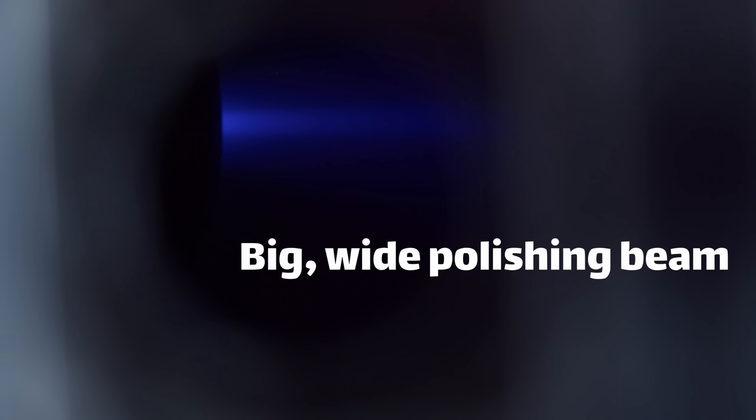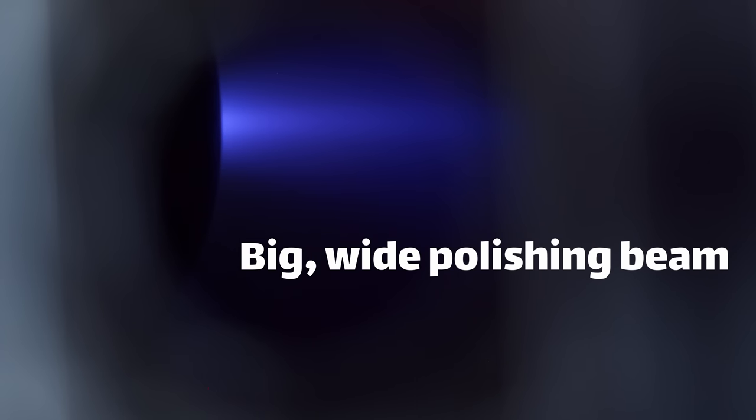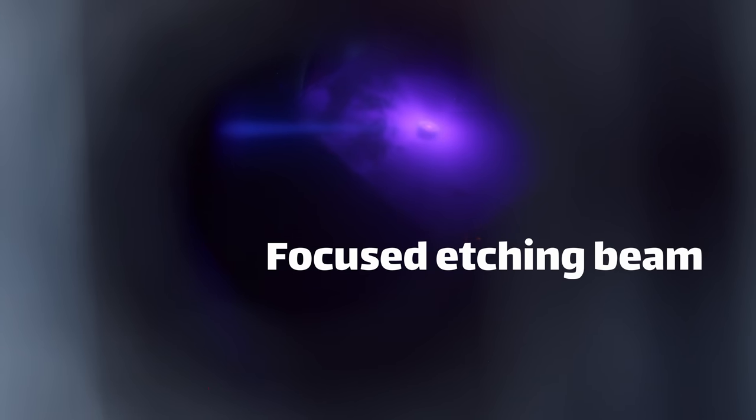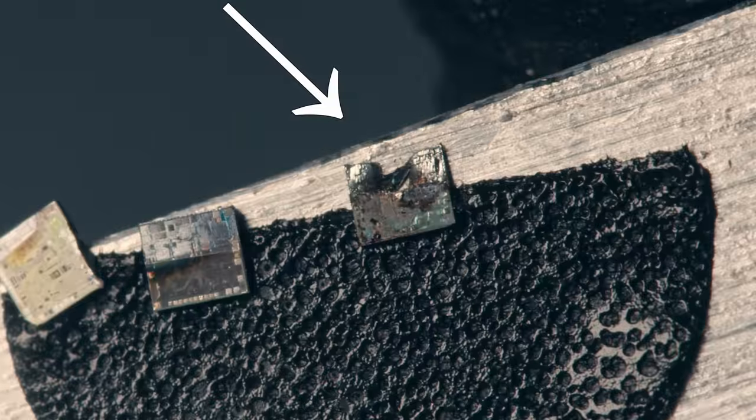Depending on how you configure the machine, you can get anywhere from a very gentle polishing effect all the way up to very aggressive etching. And if you're a little too aggressive with it, you can accidentally blast holes straight through your sample. So how exactly does all this work?